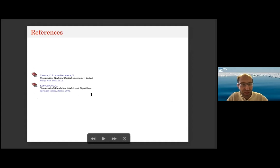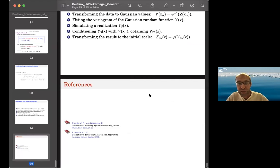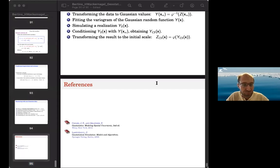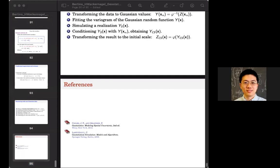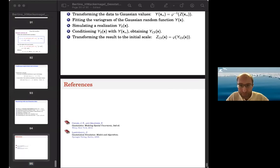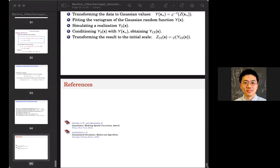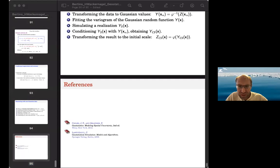A few references: a book by Chiles and Delfiner, and a book by Christian Jean-Tujul — these give everything you need to know about conditional simulations and geostatistical techniques and much more. That ends this presentation. Finally, a note on vocabulary: optimal interpolation, or what early Russian methodologists called objective analysis, is kriging.